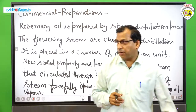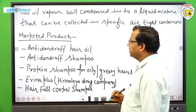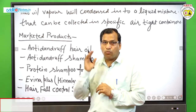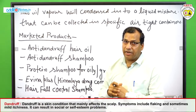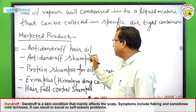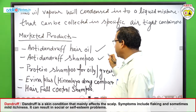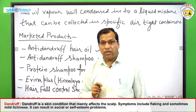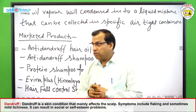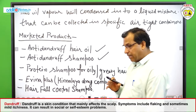Now we will discuss the marketed preparations. Rosemary oil is mainly found in hair oil products. Anti-dandruff oil and anti-dandruff hair oil are available in the market, similarly anti-dandruff shampoos that contain small quantities of rosemary oil. For persons whose hair is oily or greasy, protein shampoo for oily and greasy hair is also available in the market.